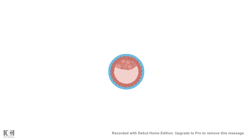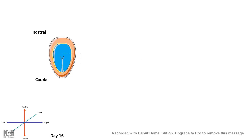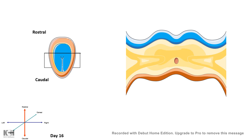After gastrulation, in the gastrula where you have all three layers, if you cut the gastrula at a mid-level section you would have a view like this. In blue you can see the ectoderm, in yellow you can see the mesoderm, and in brown you can see the endoderm. At least three germ layers are formed at this point.